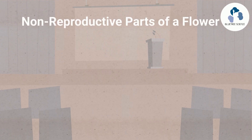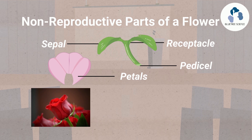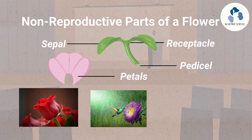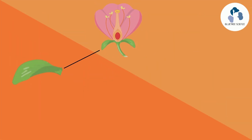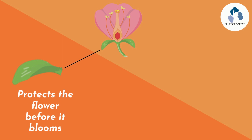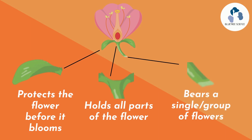There are also non-reproductive parts of the flower, which include the petals, the sepal, the receptacle, and the pedestal. Though the petals are considered non-reproductive, they help attract birds and insects that will pollinate the flower. The sepal is a modified leaf that protects the flower before it blooms. The receptacle is the flat, concave or convex part of the stem from which all parts of the flower arise. And the pedestal is a stalk that bears a single flower or group of flowers.